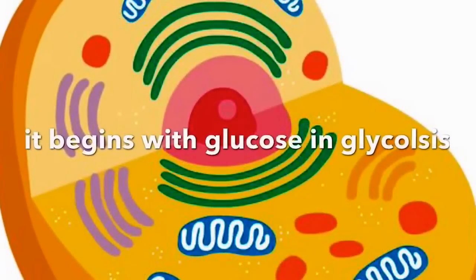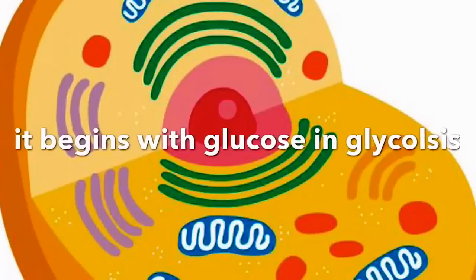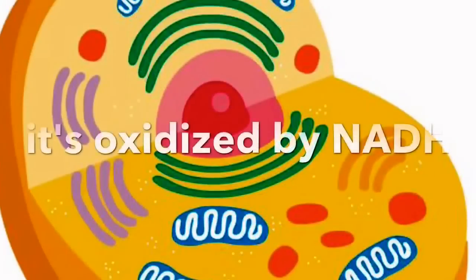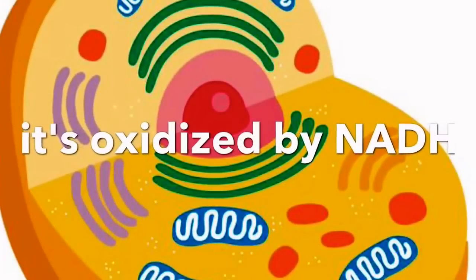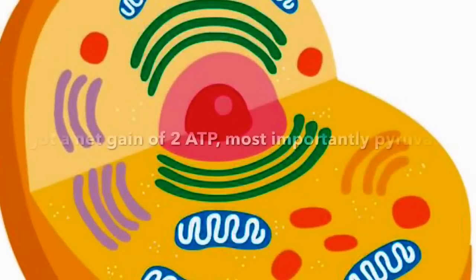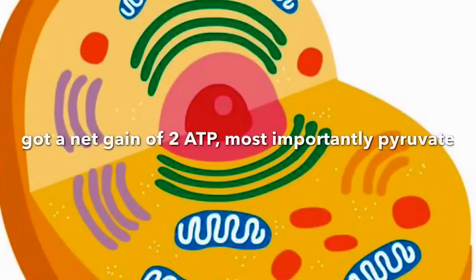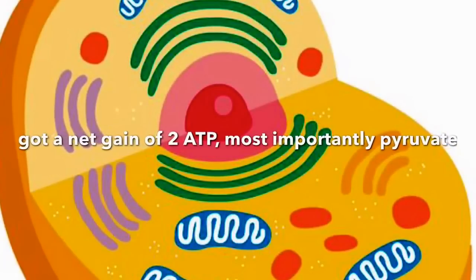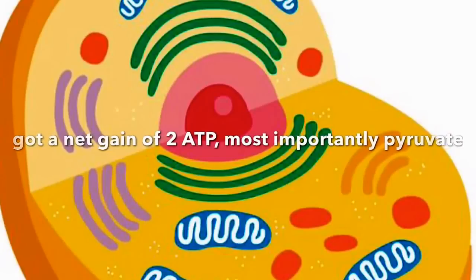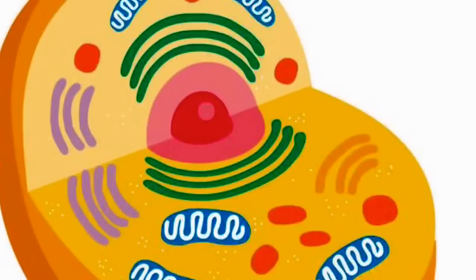It begins with glucose and glycolysis. It's oxidized by NADH. We get a net gain of 2 ATP, and most importantly, pyruvate.